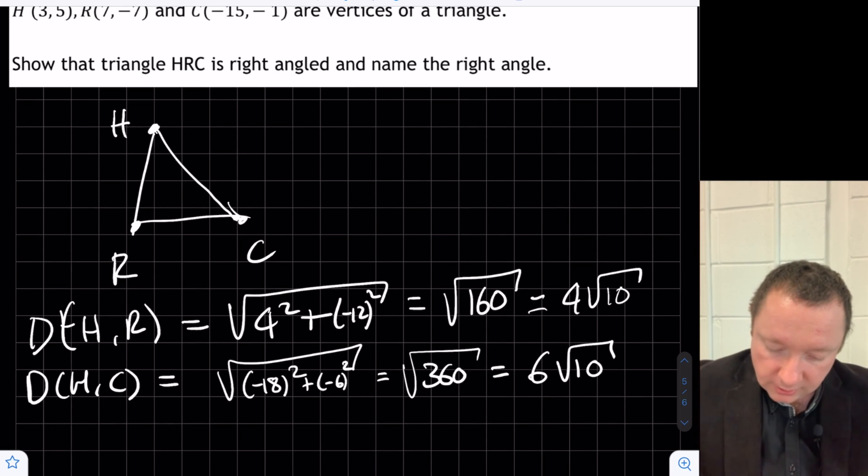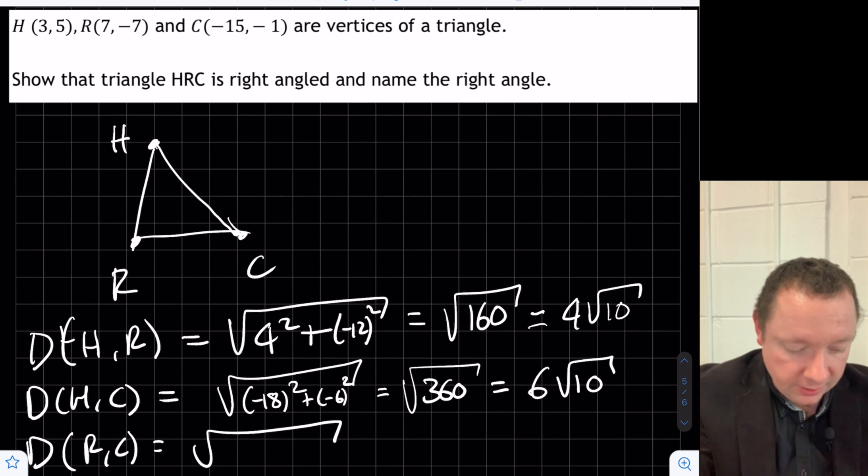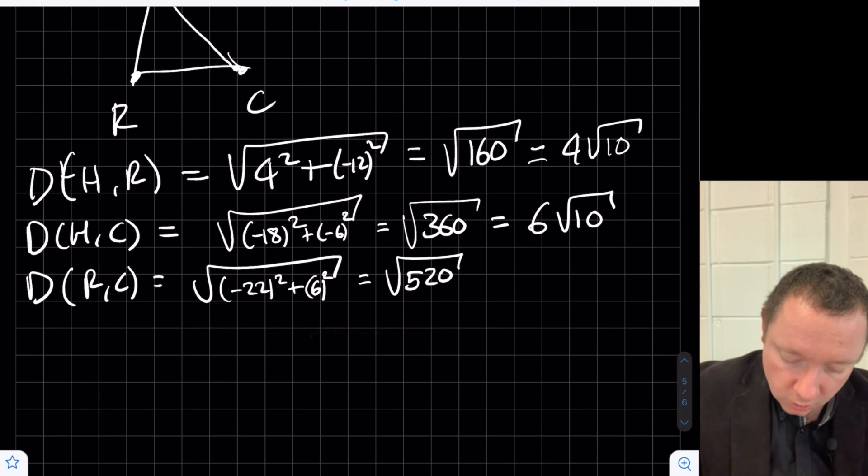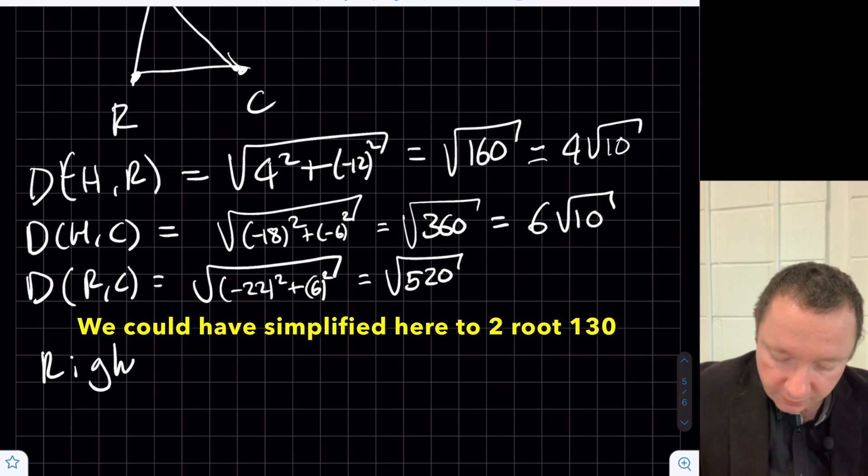And our last distance, we've done H to R, H to C, so we need to do R to C. We've got minus 15 take away 7. That's minus 22 squared plus 6 squared. That's 520. So right-angled triangle is by Pythagoras.